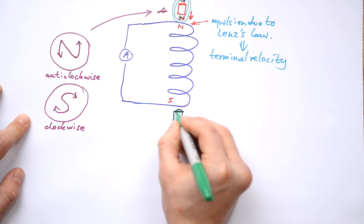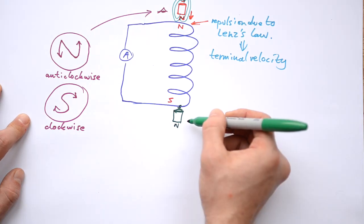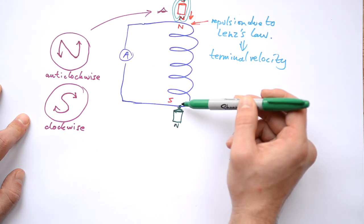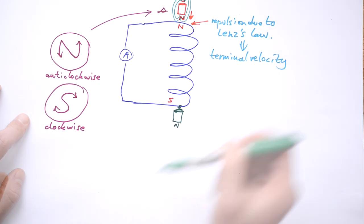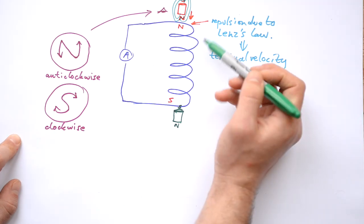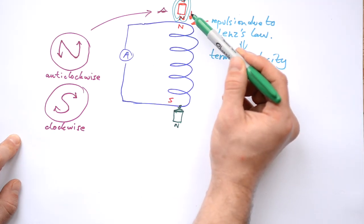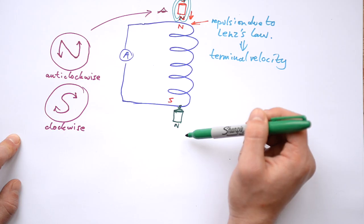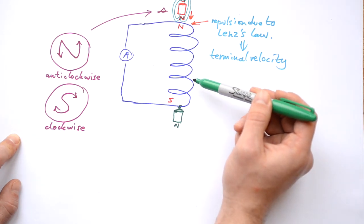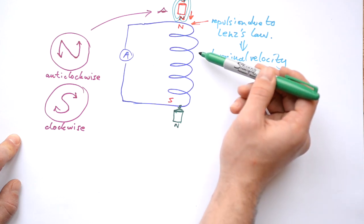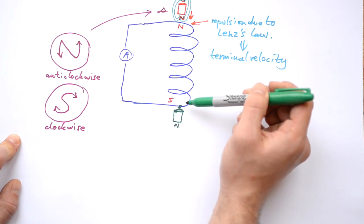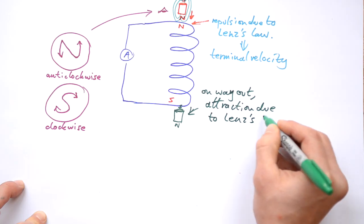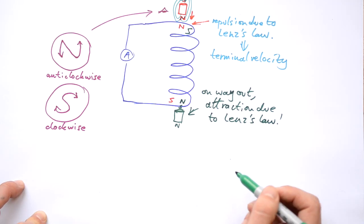But once our magnet has exited the solenoid, if we still have a south pole at the bottom, doesn't that mean the south pole of the solenoid repels the south pole of the magnet and accelerates it away? We know that can't be the case due to Lenz's law. The coil of wire tries to stop the magnet from coming in by producing an equal and opposite force, and on the way out, it tries to stop the magnet from leaving — producing attraction. Lenz's law means magnets and wires always want what they can't have.